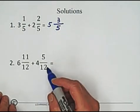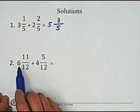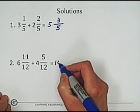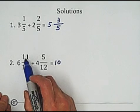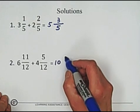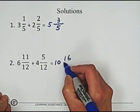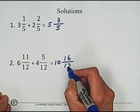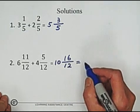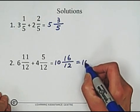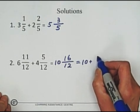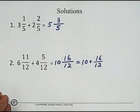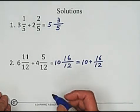The second. Add the whole number portion. 6 plus 4 equals 10. And add the numerators. 11 plus 5 equals 16. Keep the denominator unchanged. We can write two parts, whole number portion and the fraction part, because we need to simplify. 16 over 12 is an improper fraction.